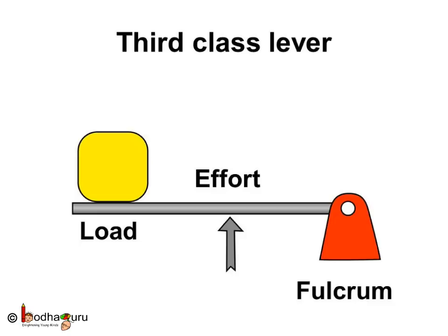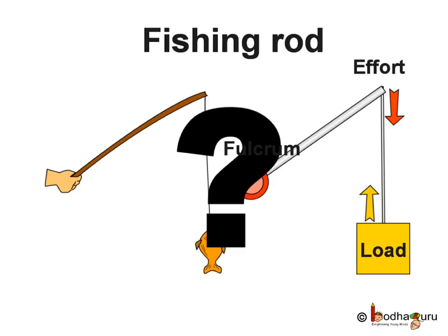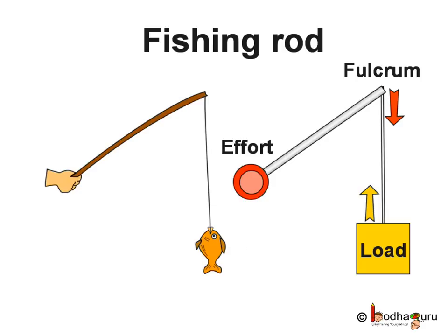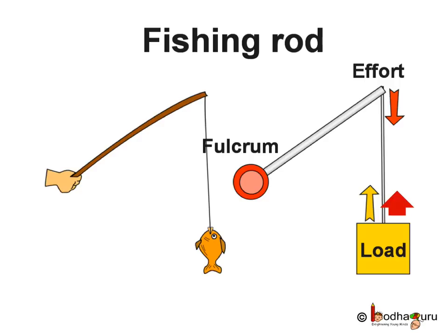Third class levers have the effort placed between the load and the fulcrum. A fishing rod is a third class lever: your hand is the fulcrum, the fish or bait is the load at the end, and the effort is applied at the middle of the pole — that is why the pole bends toward the middle. The load moves upward while the effort at the center moves downward, which may seem strange, but think about it: the load is going up, so the effort has to go down, and your hand remains fixed as the fulcrum.